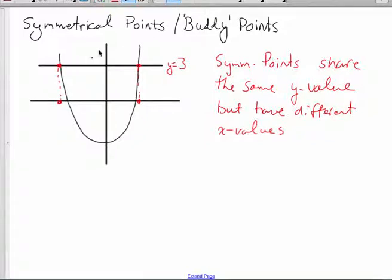And lastly, this is my axis of symmetry, the line that mirrors the left and right half. The nice thing about buddy points is that the distance from one buddy point, the x value of one buddy point to the axis of symmetry, is the same distance as the other x value to the axis of symmetry.